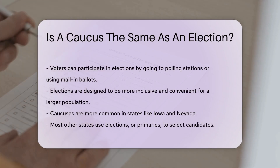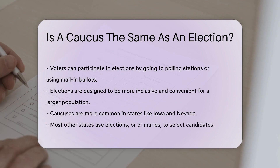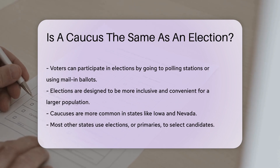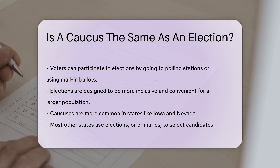Elections are designed to be more inclusive and convenient for a larger population. Caucuses are more common in some states, like Iowa and Nevada. Elections or primaries are used in most other states.